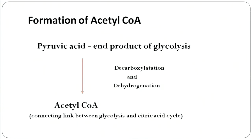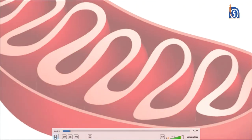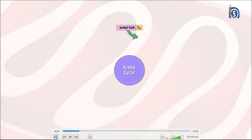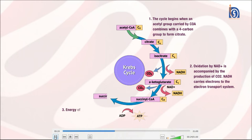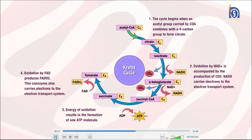Pyruvic acid, the end product of glycolysis, undergoes decarboxylation — releasing carbon dioxide — and dehydrogenation, leading to the formation of acetyl coenzyme A. Acetyl coenzyme A is essentially the link between glycolysis and the Krebs cycle. The acetyl group, a two-carbon molecule from glycolysis, combines via acetyl coenzyme A with oxalic acid, a four-carbon molecule, to form citrate, a six-carbon molecule. It is because of citrate that this cycle is known as the citric acid cycle.